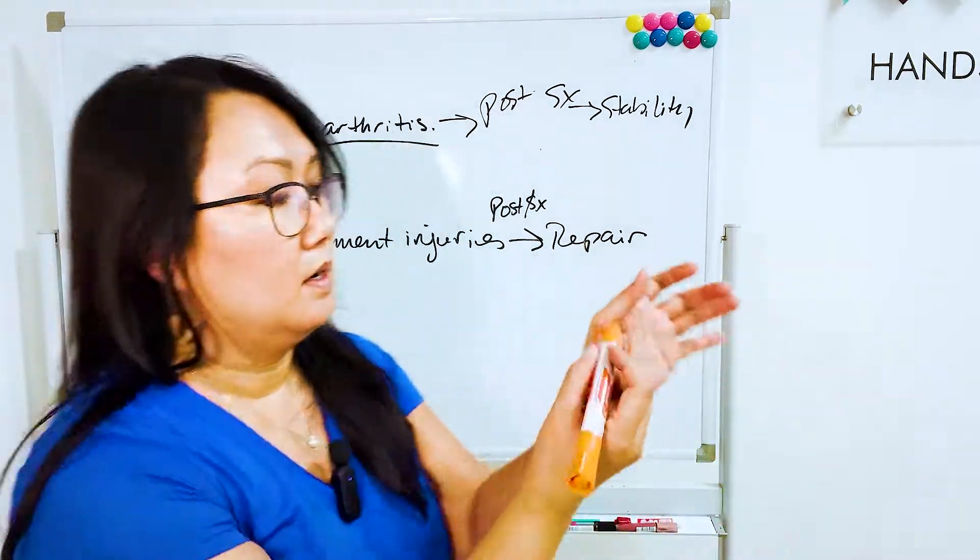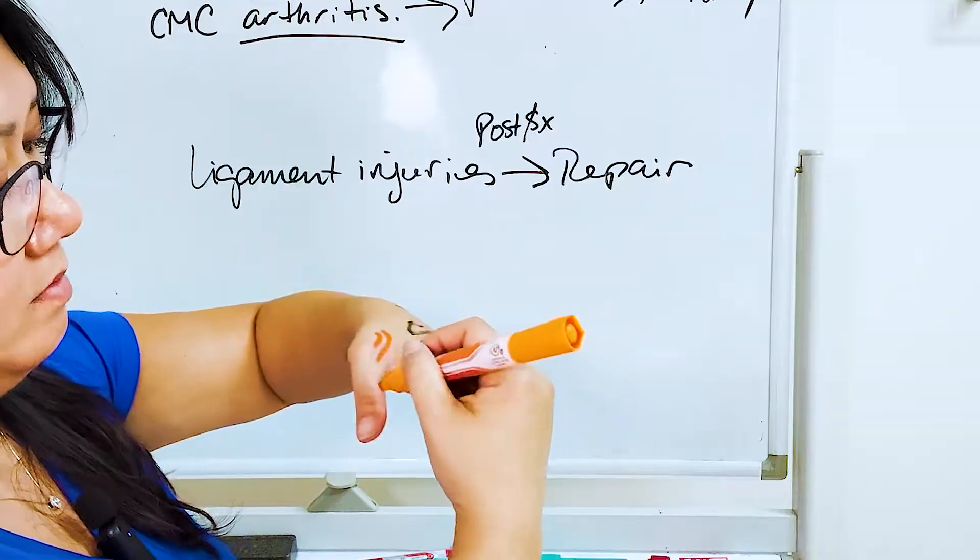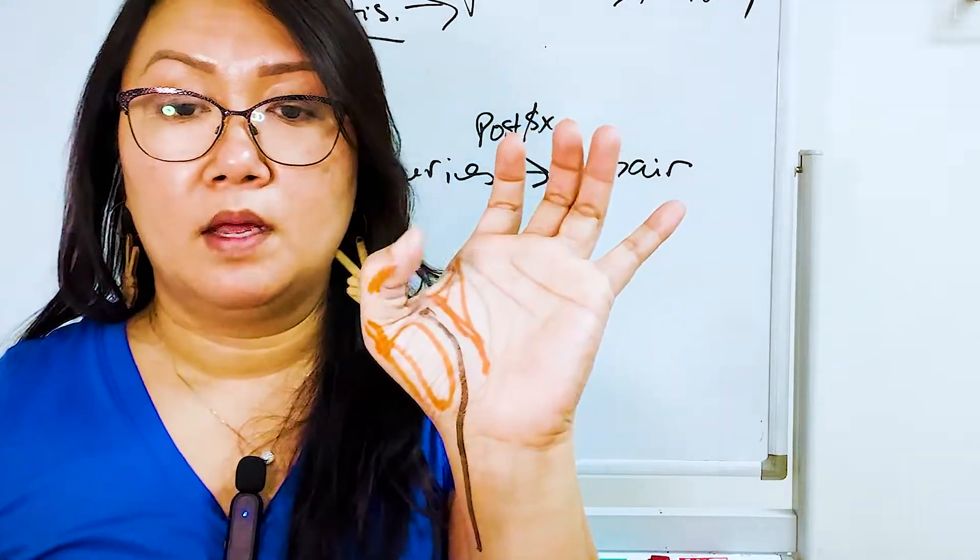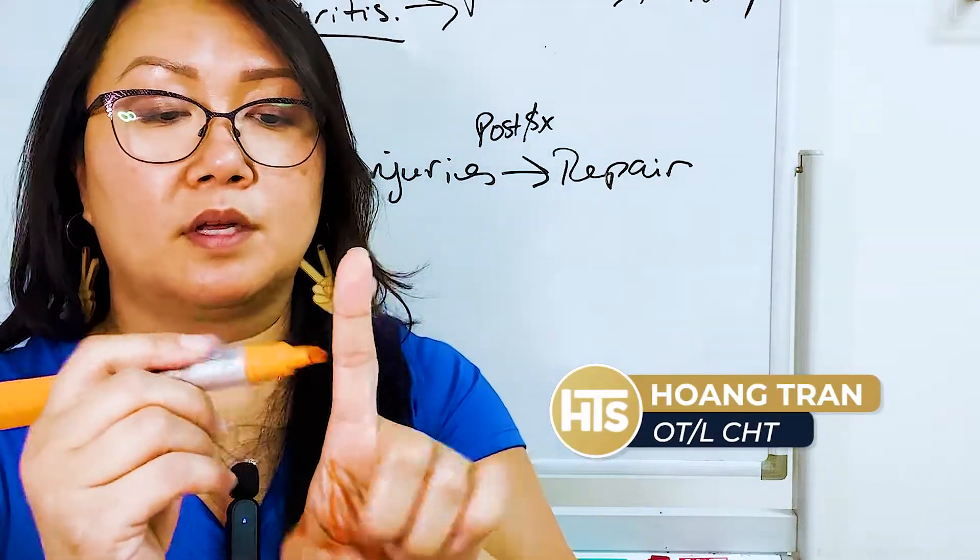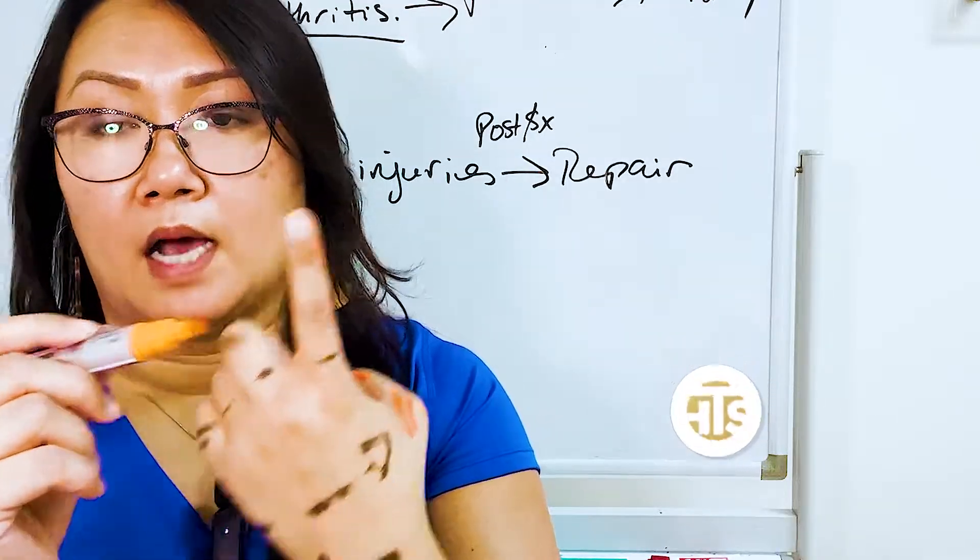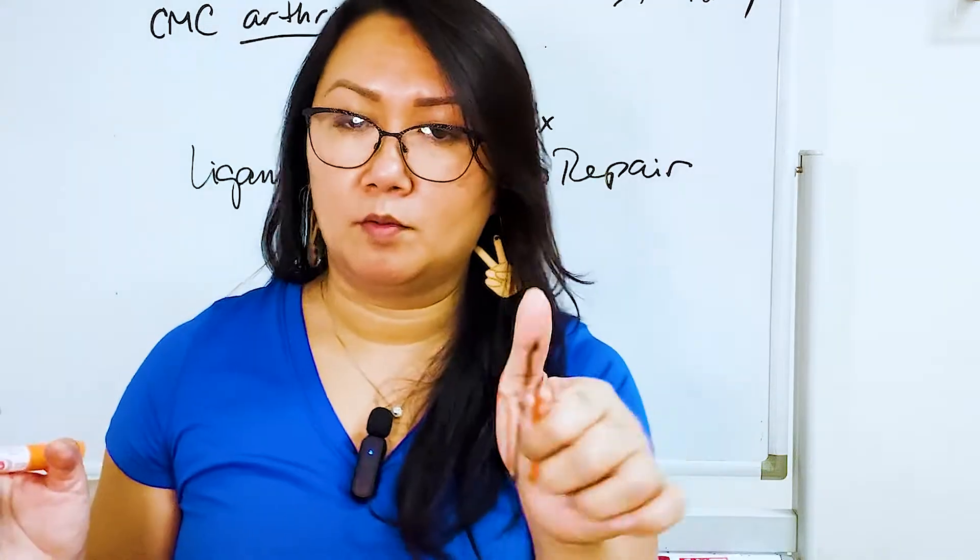So ligaments, we have ligaments on the sides of our thumb and then of course on our IP. Now the IP of the thumb, the collateral ligaments there are very similar to the collateral ligaments here on the PIP of the fingers. So they're taught all the time and they're pretty hardy.